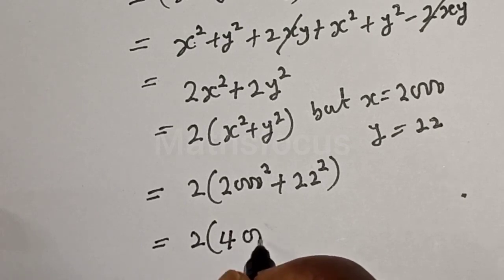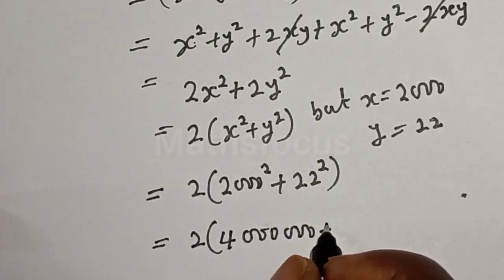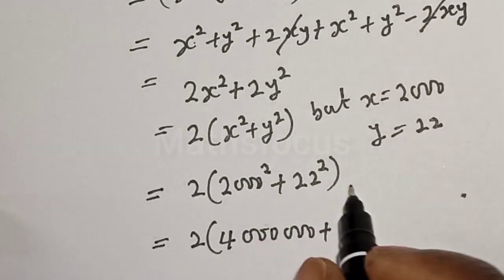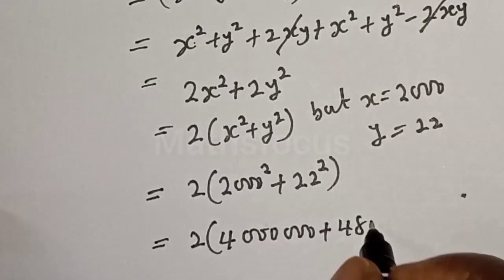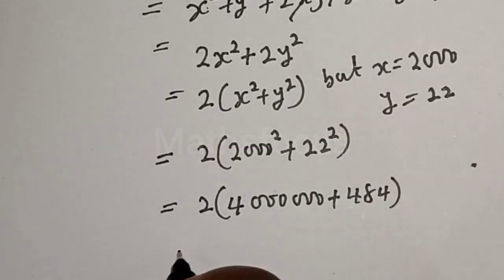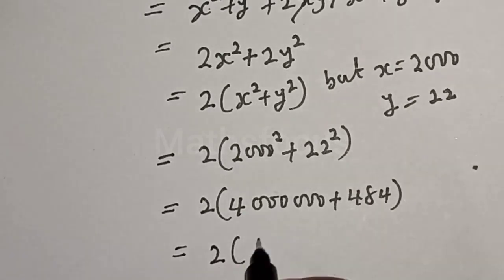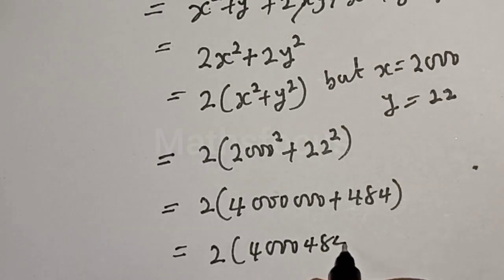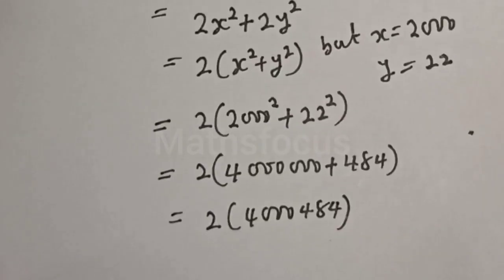2000 squared is 4 million. Plus 22 squared, that is 484. Let's add this plus this: we have 4,000,484.